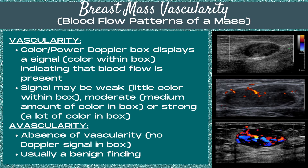Vascularity is when the color or power Doppler box displays a signal, so there's color within the box indicating that blood flow is present. The signal may be weak, with little color in the box; moderate, with a medium amount of color; or strong, with a lot of color signal in the Doppler box. The first type of breast mass vascularity is avascularity — the absence of vascularity in a mass, where there's no Doppler signal within the box.